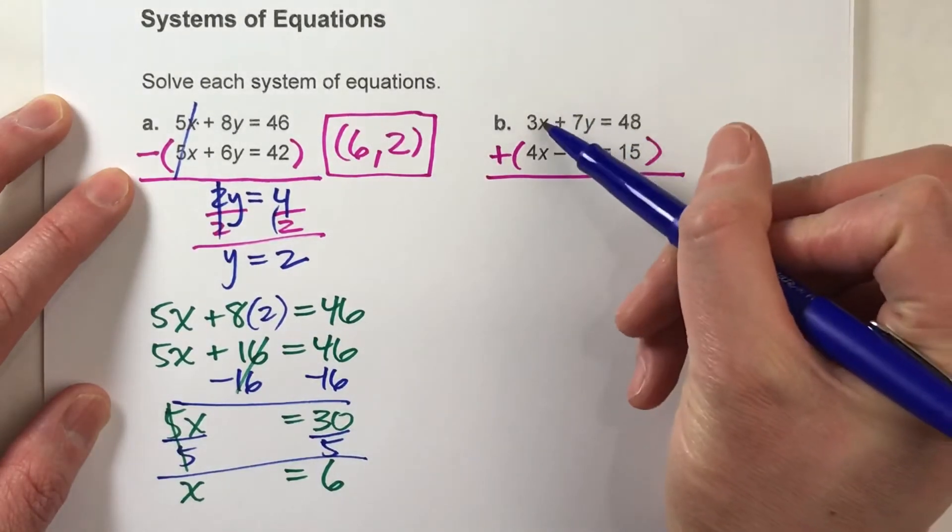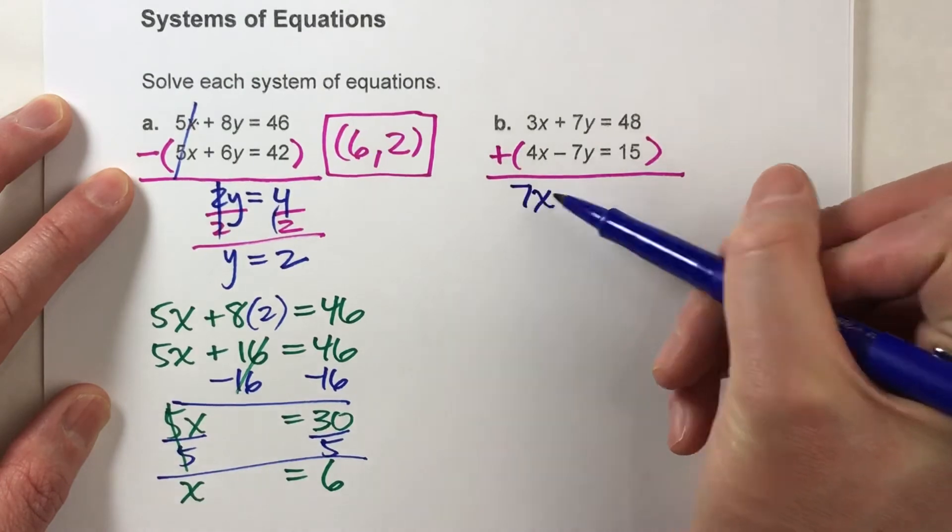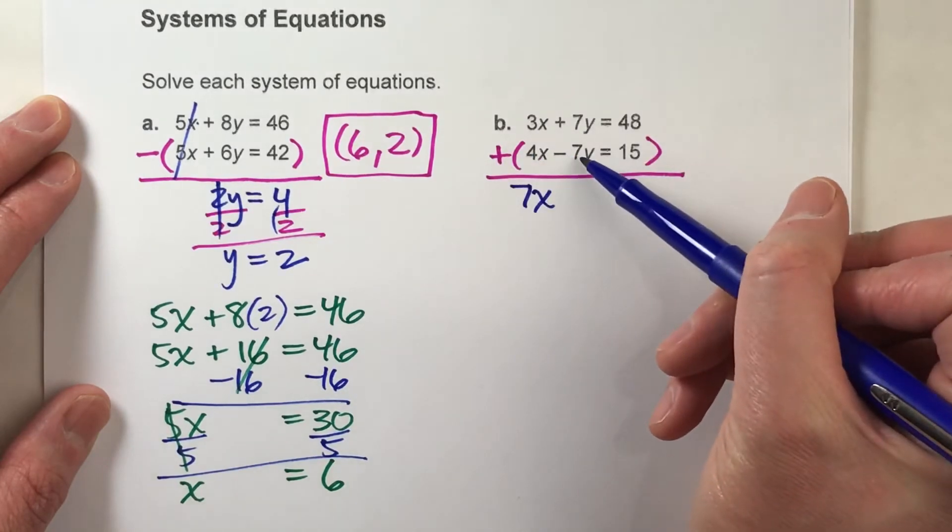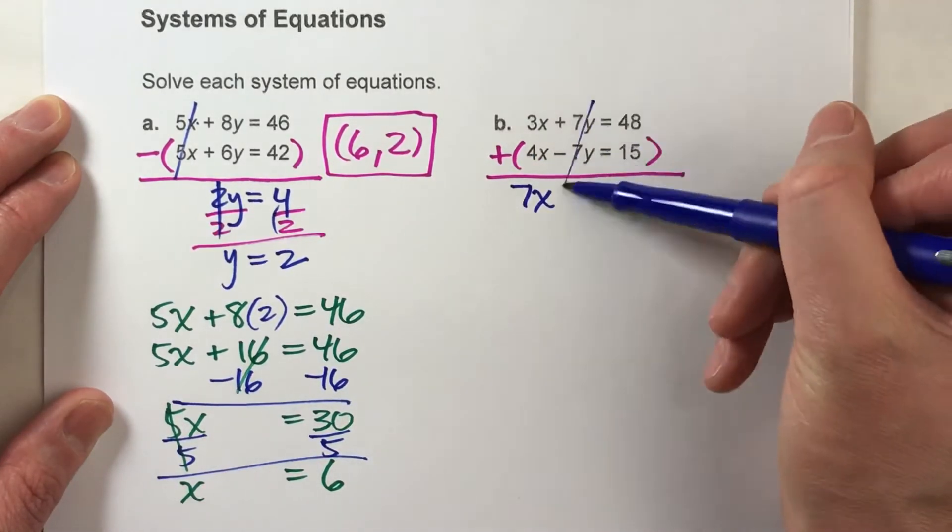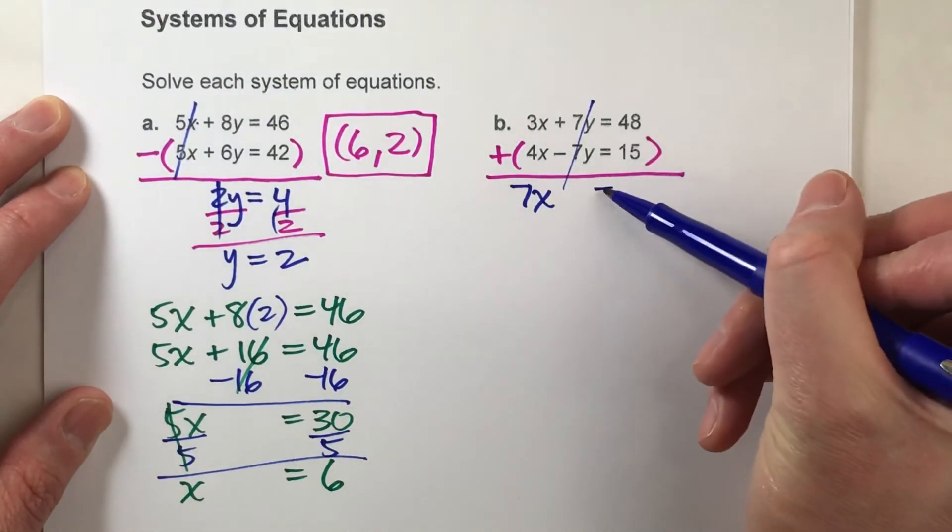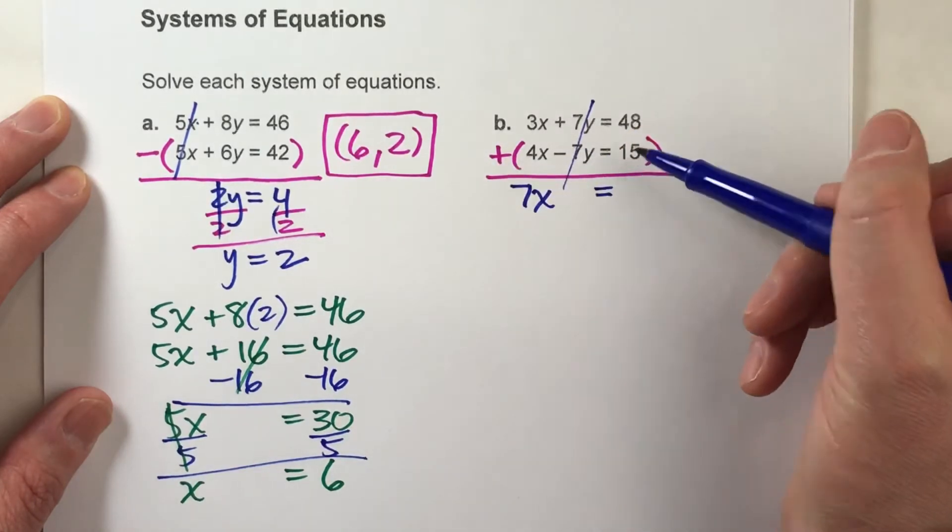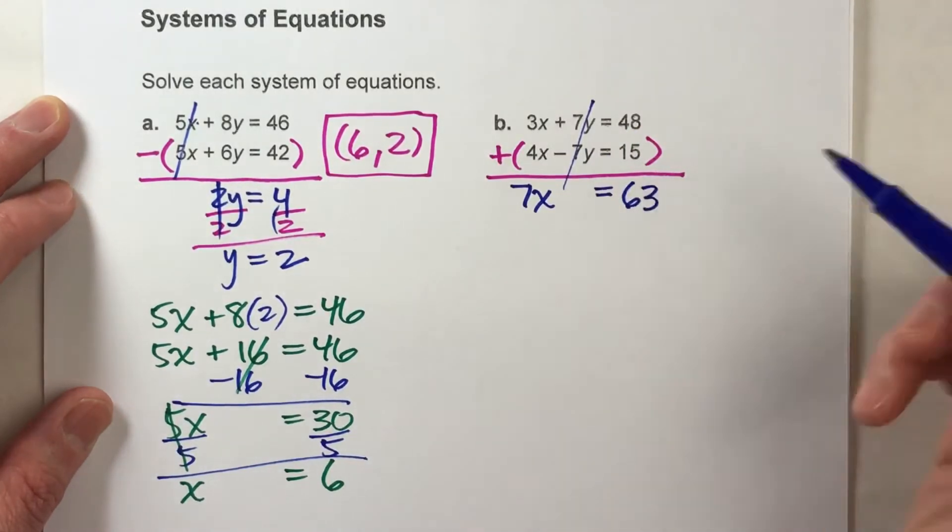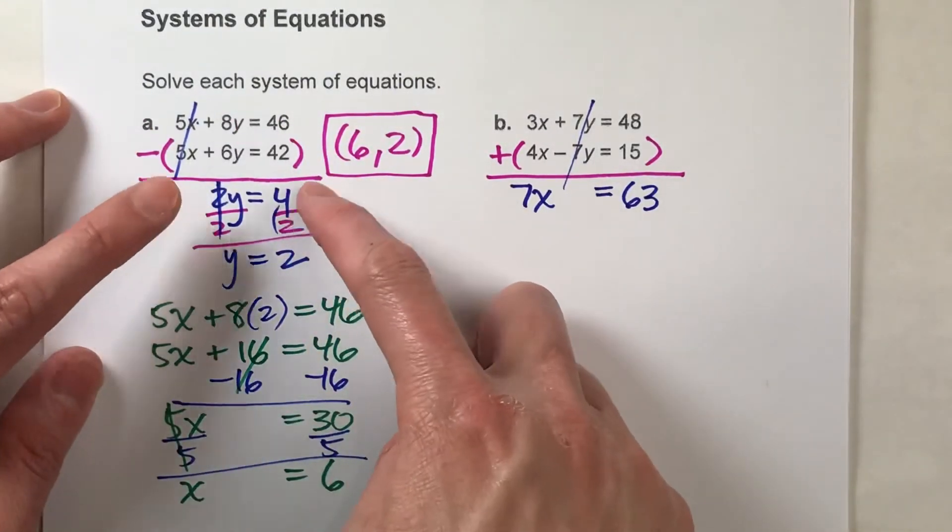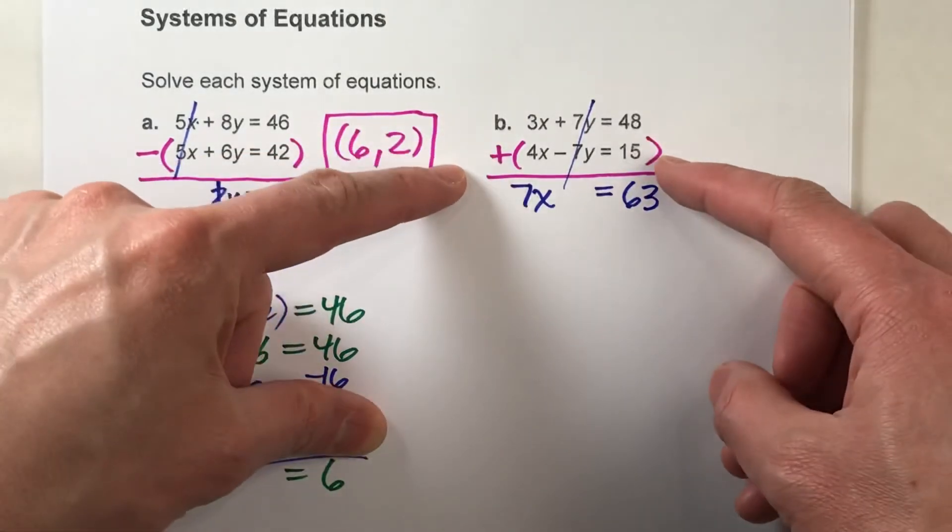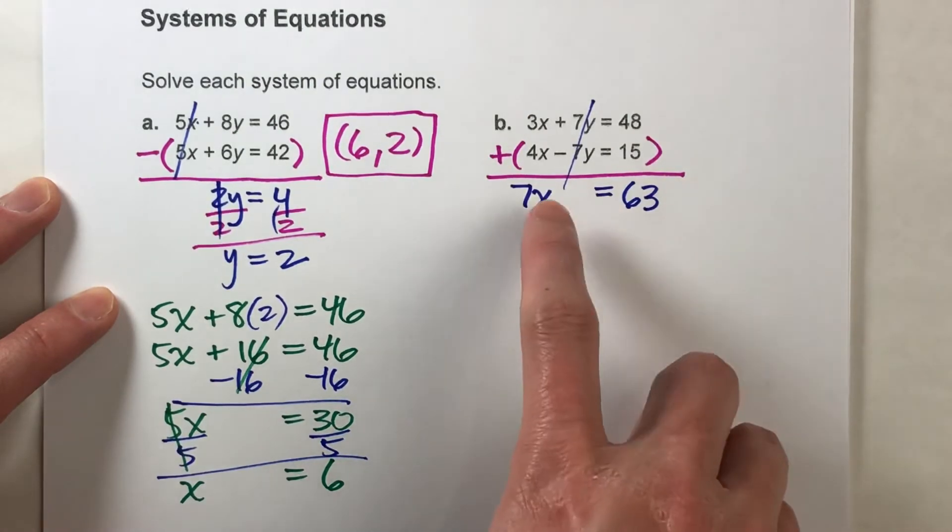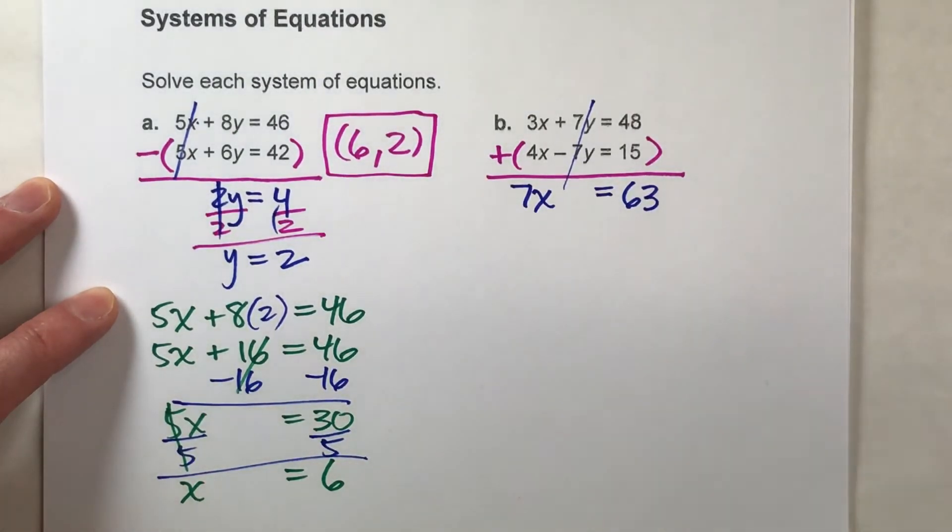Now, the x's, 3x's plus 4x's, gives me 7x's. But look what happens with the y's. Positive 7y's plus negative 7y's gives you no y's. They completely eliminate each other. Drop down my equal sign. 48 plus 15 is 63. So just like before, when we subtracted the two equations, we eliminated one of the variables and it had a simple equation. This time, when we add the two equations, we've eliminated a variable. We've eliminated y. And now we can solve for the remaining variable, which is x. So to solve, I'm going to divide both sides by 7. These 7s undo each other. x gives me 9.